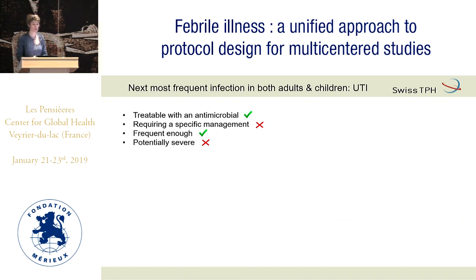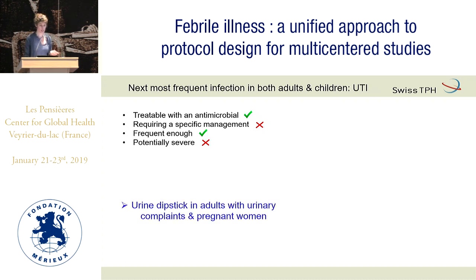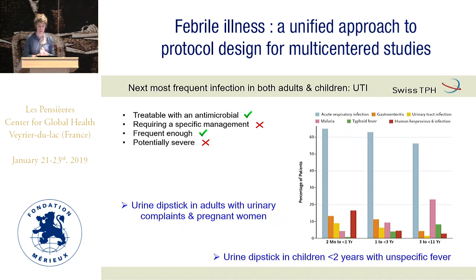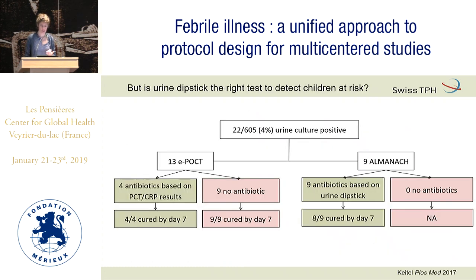The next most frequent infection: UTI. In children, it's an unspecific fever because they usually don't complain of symptoms — and it's treatable and frequent. For adults, they should have symptoms and signs, so this is outside undifferentiated fever. We should test adults with a urine dipstick only when they have complaints, and probably in pregnant women. For children, it is age-dependent — it's young children in nappies. In our algorithm, when no cause of fever is found and the child is under two years, we test with urine dipstick.